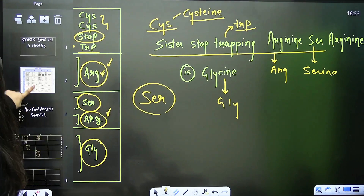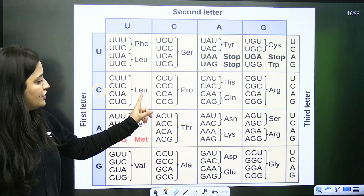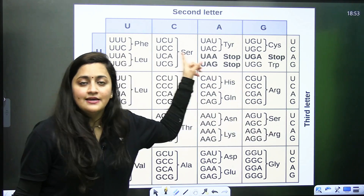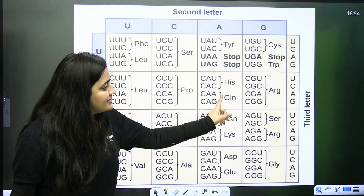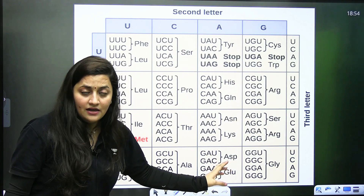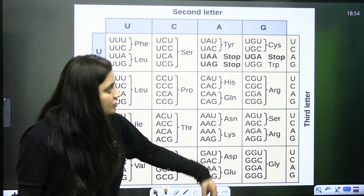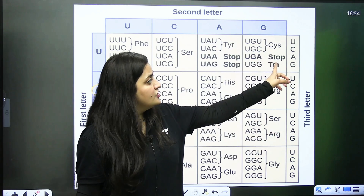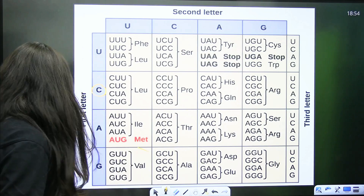Let's do a quick revision of all the tricks: 'Philly Elee Met Well' — phenylalanine, leucine, leucine, isoleucine, methionine, valine. 'Sir Pro Tharala' — serine, proline, threonine, alanine. 'Tyrosine Stop His Gun' — tyrosine, stop, histidine, glutamine. 'Asian Like Aspartic Glue' — asparagine, lysine, aspartic acid, glutamic acid. 'Sister Stop Trapping Arginine Sir Arginine is Glycine' — cysteine, stop, tryptophan, arginine, serine, arginine, glycine. If you liked it, let me know in the comments!